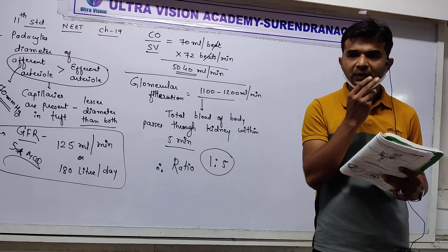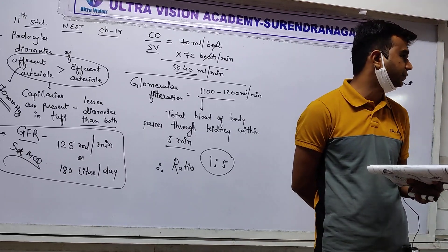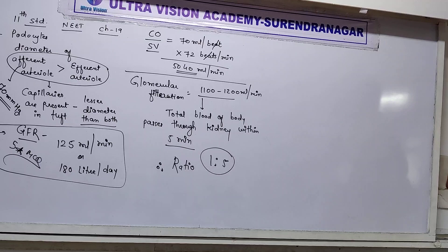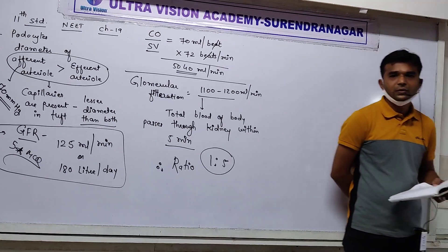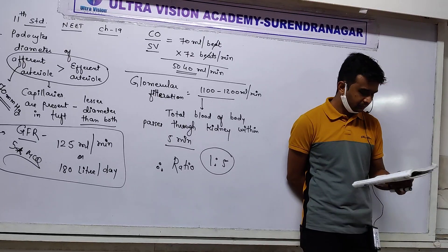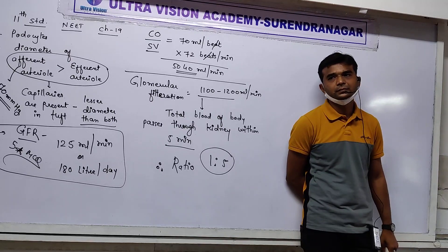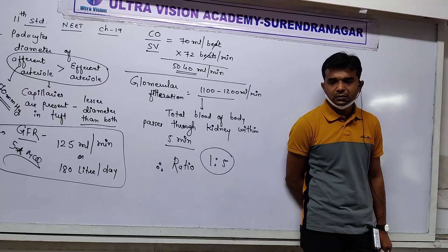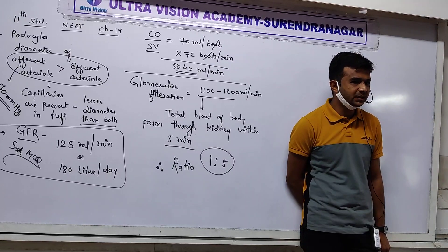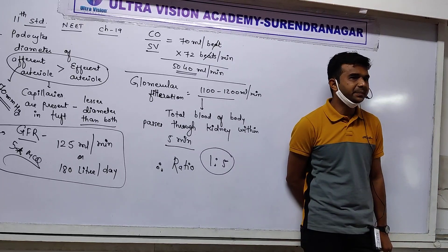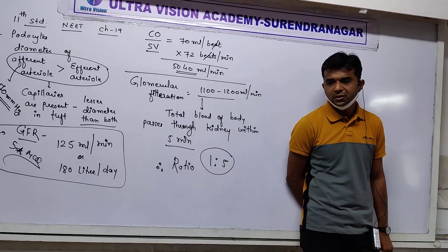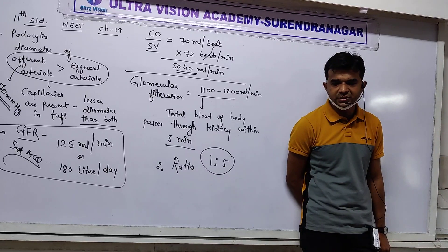There are two types of nephrons: cortical nephrons and juxtamedullary nephrons. Cortical nephrons are 85% of the total, while juxtamedullary nephrons make up the remaining 15%.